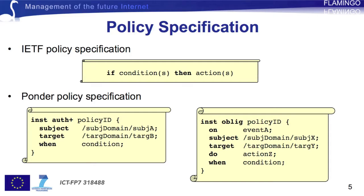The conditional part of the rule can be a simple or compound expression specified in either conjunctive or disjunctive normal form. The action part of the rule can be a set of actions that must be executed when the conditions are true.